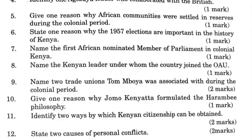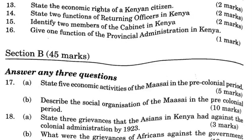Question 13: Give two economic rights of a Kenyan citizen. One, right to equal pay for equal work. Two, right to own property. Three, right to associate, for example to belong to a trade union. Four, right to join professional organizations.